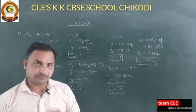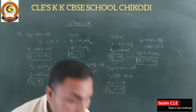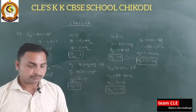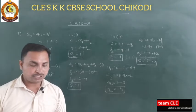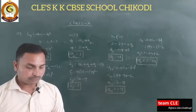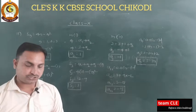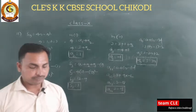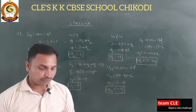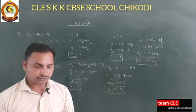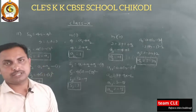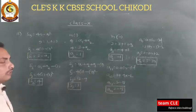Questions 12 to 14 are straightforward — I hope you can solve those on your own. Now let's move to question number 15. A contract on a construction job specifies a penalty for delay beyond a certain date: ₹200 for the first day, ₹250 for the second day, ₹300 for the third day, and so on — each succeeding day being ₹50 more than the preceding day.